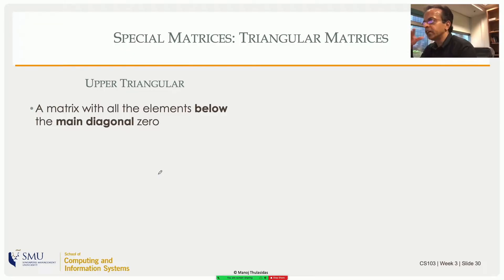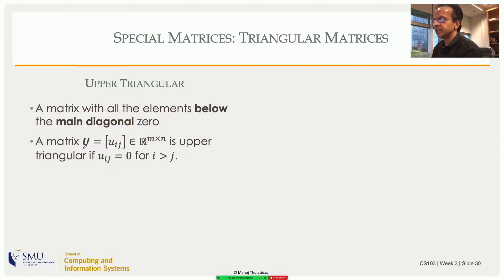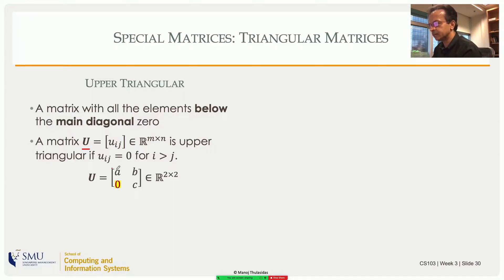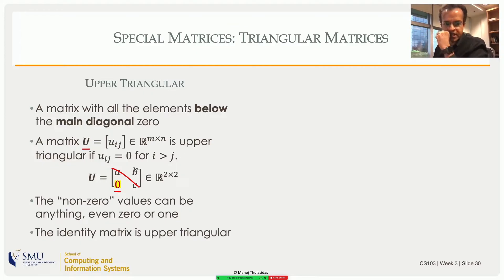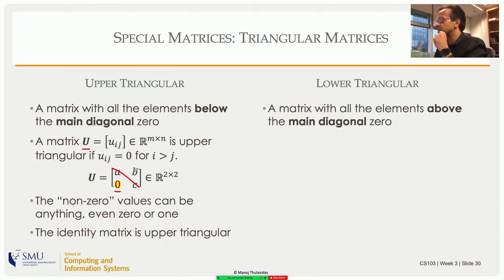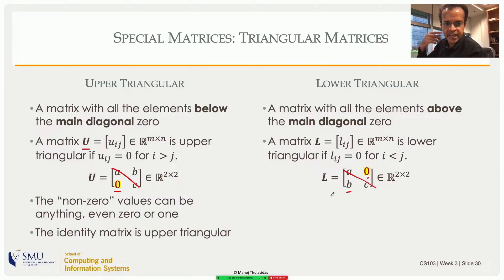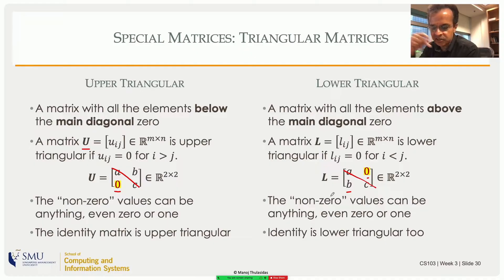An upper triangular matrix has all elements below the main diagonal equal to zero. The notation uses U, and formally u_ij equals zero for all row indices greater than the column index. Elements on the diagonal and above can be anything, including zero. A lower triangular matrix has all elements above the main diagonal equal to zero. The zero matrix is both upper and lower triangular and diagonal. The identity matrix is also upper triangular, lower triangular, and diagonal.